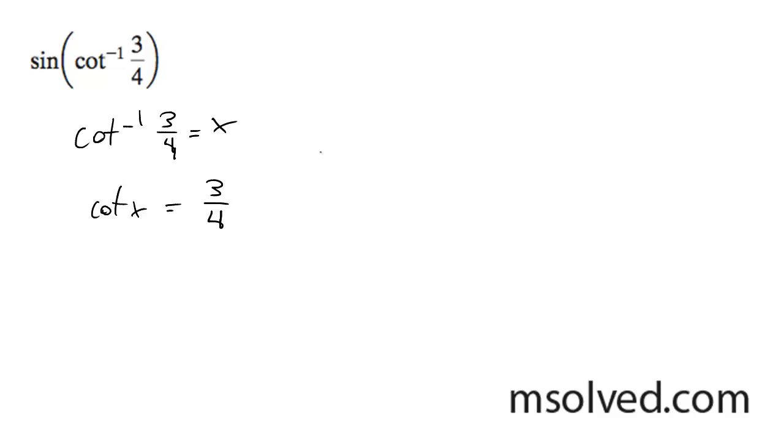Split them up. What's going to happen here is we don't really know what value of x exactly gives us 3 over 4. I just know that because it's cotangent, it's going to be between 0 and pi. And as a result, I know that cotangent is x over y.